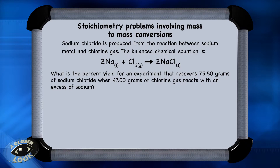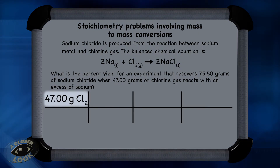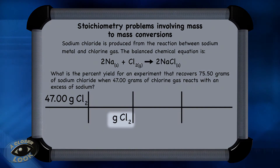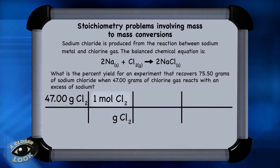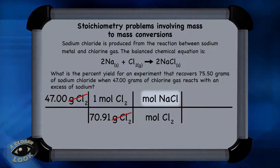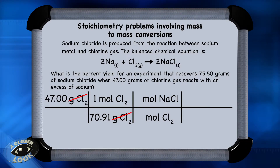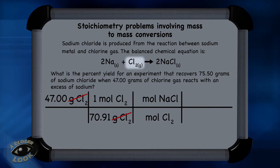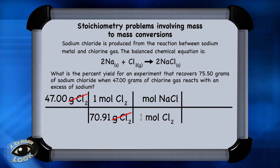Take the 47.00 grams of chlorine and put it in the upper left-hand corner of a conversion chart. Bring down the units — grams of chlorine — and convert to moles of chlorine using the molar mass, 70.91 grams, since there are two atoms of chlorine in a Cl₂ molecule. The units of grams of chlorine cancel. Then go from moles of chlorine to moles of sodium chloride using the mole ratio step — coefficients from the balanced equation: 1 for chlorine and 2 for sodium chloride — canceling the units of moles of chlorine.